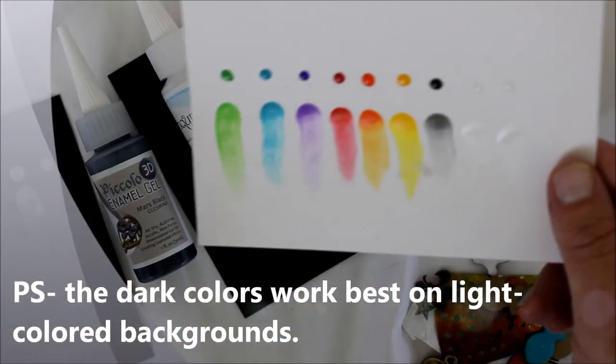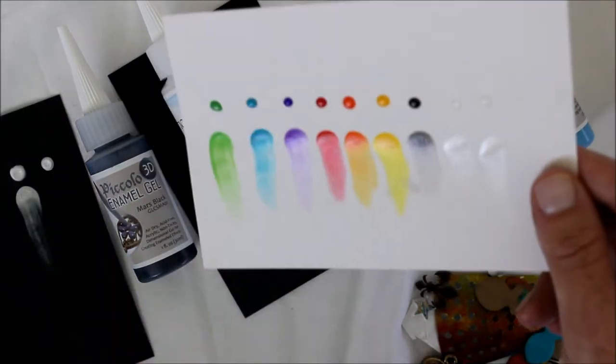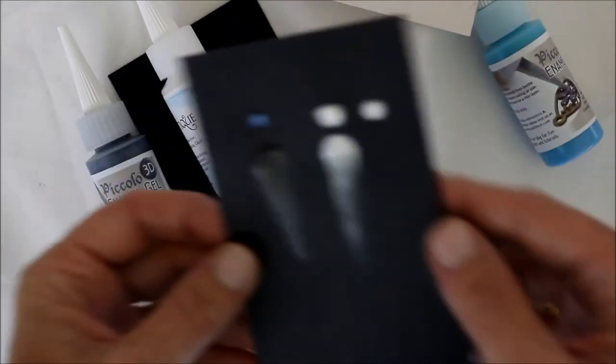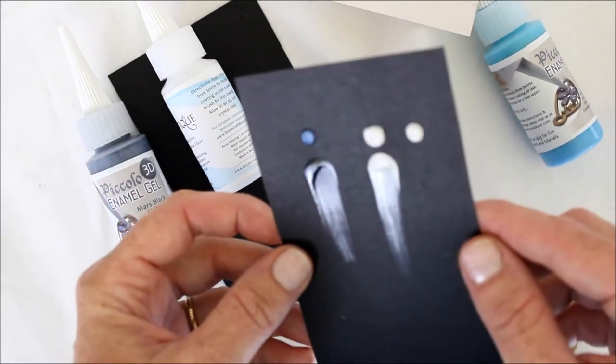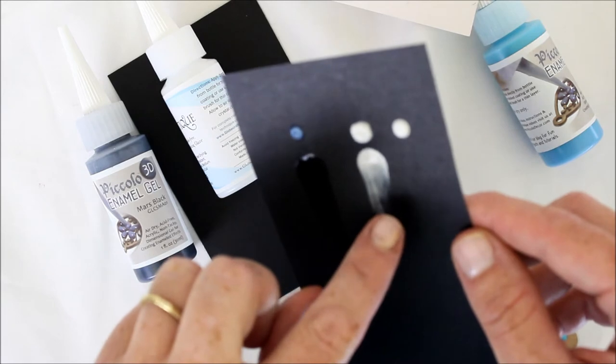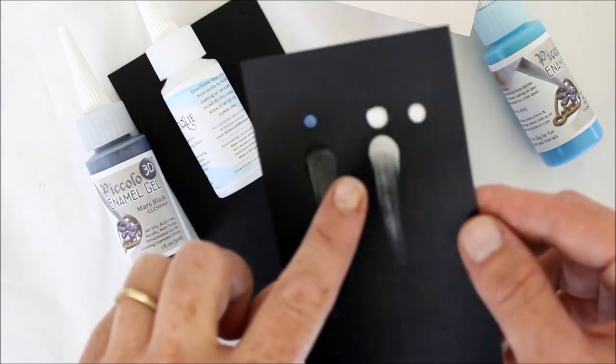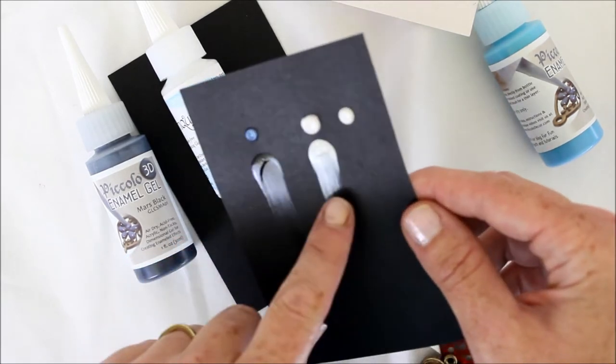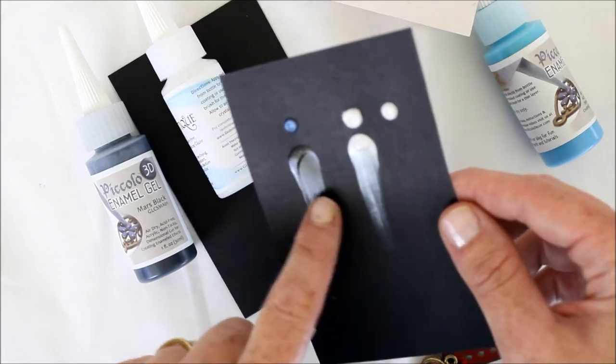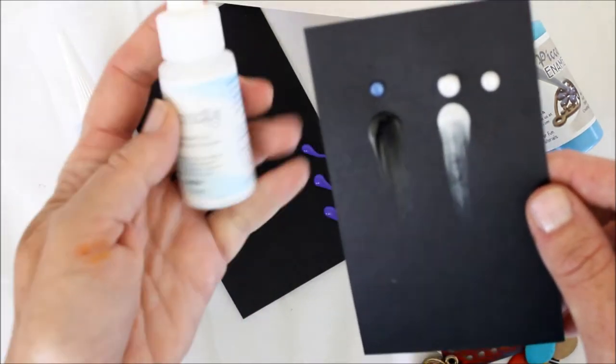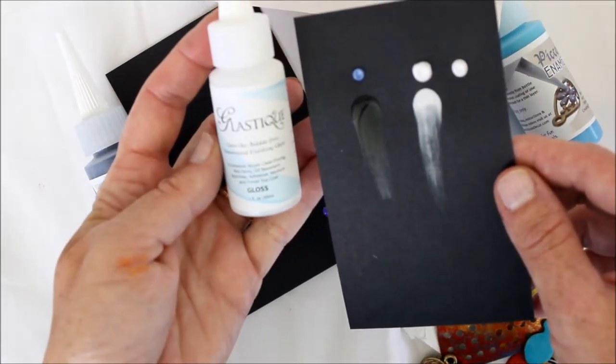There are different colors including a black, and then there is also a white. This is the titanium white. I hit it with the heat gun and that's why it kind of imploded a little bit, but the white is a true white.